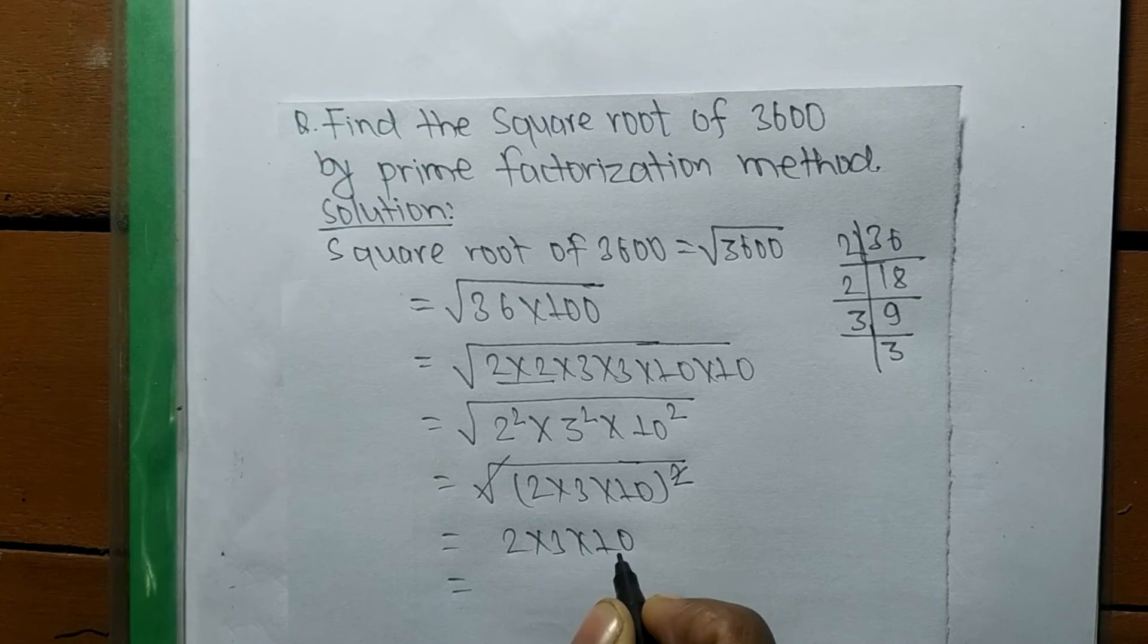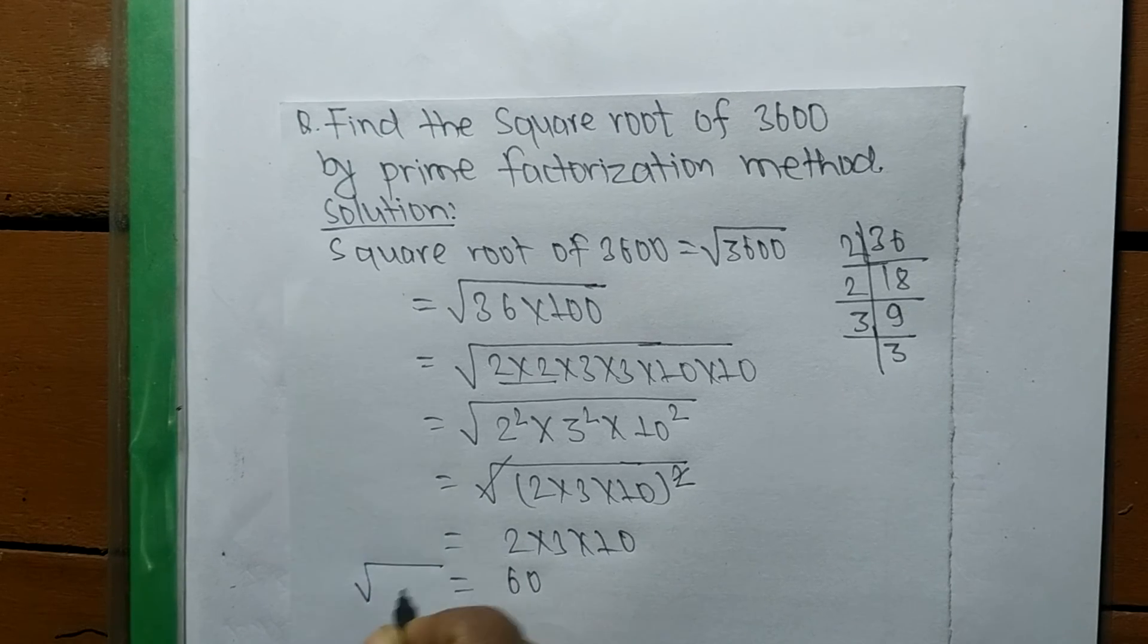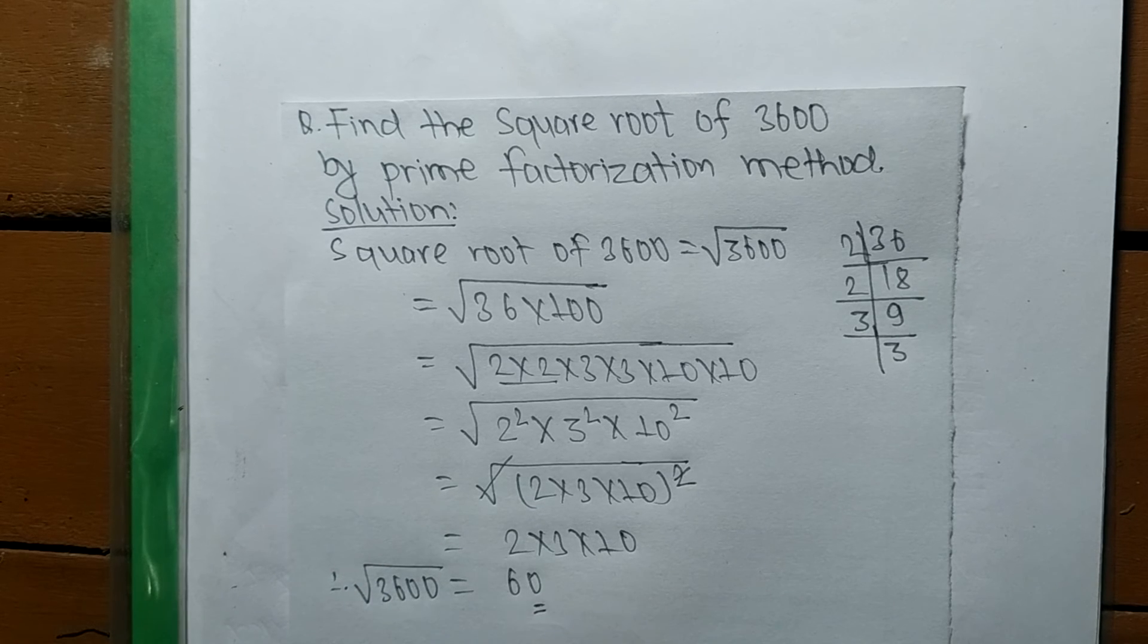The product of these numbers: 2 times 3 means 6, 6 times 10 means it is 60. So the square root of 3600 is 60.